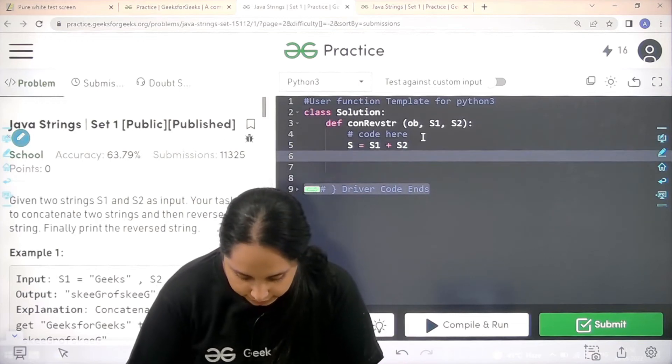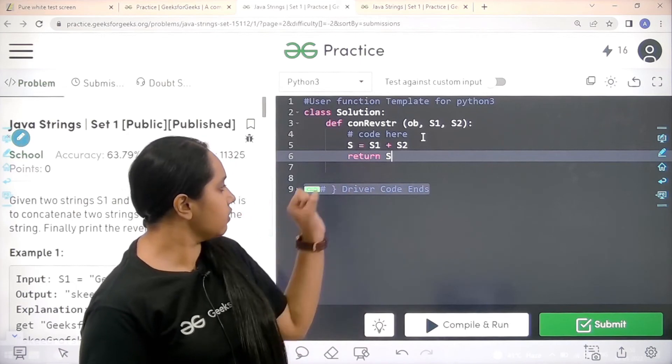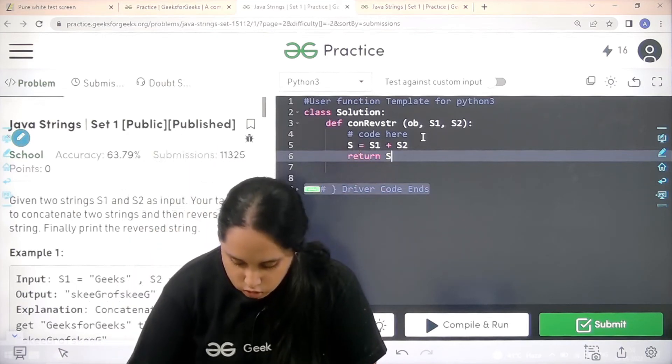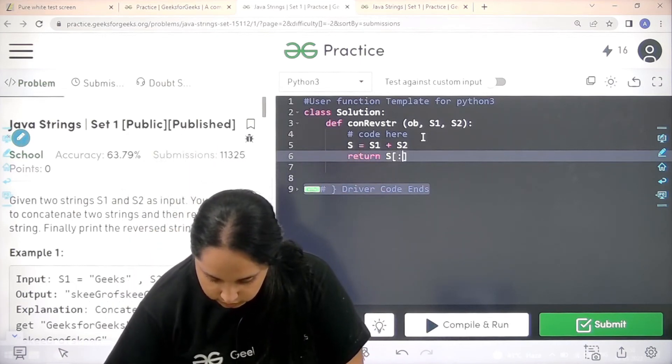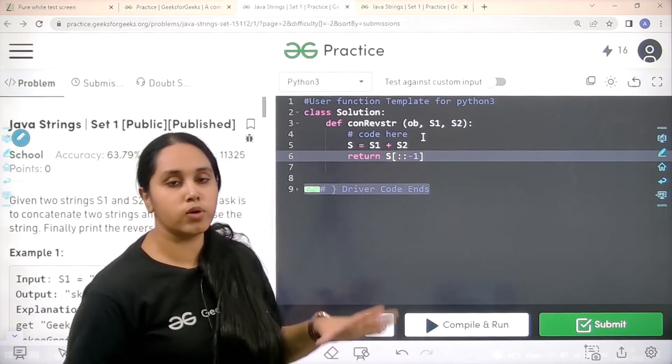Now I would directly return. Return what? I need to reverse it. I need to reverse S. So S, square brackets, colon, colon, minus 1. That is the slicing method. Now the code is done.